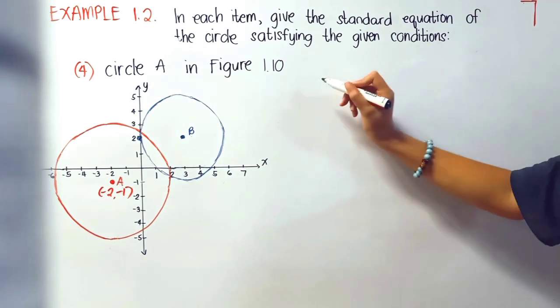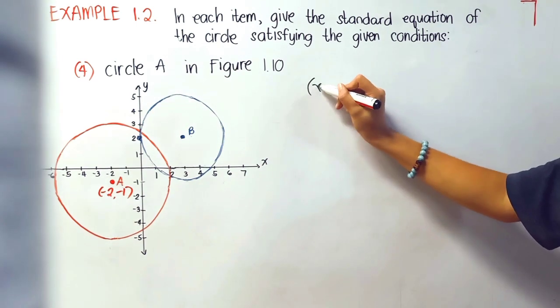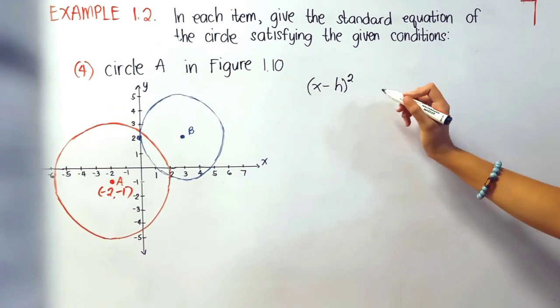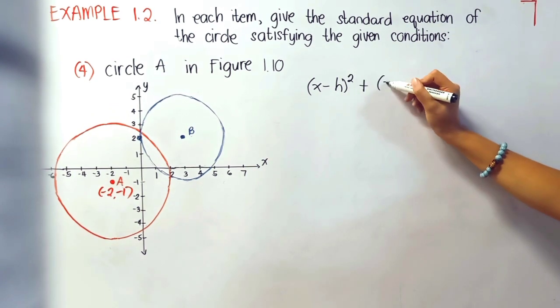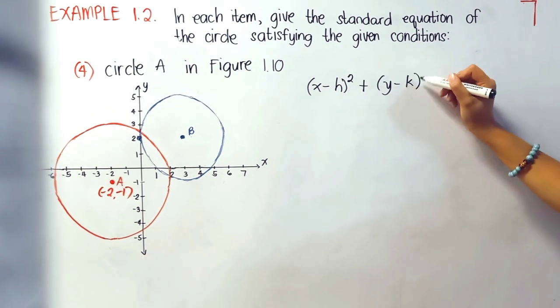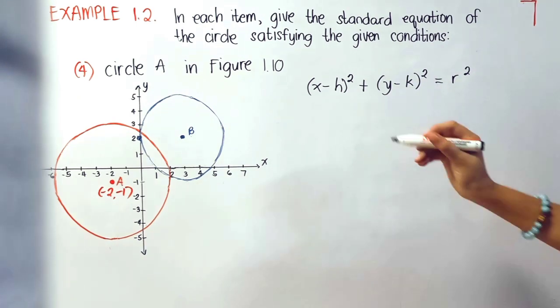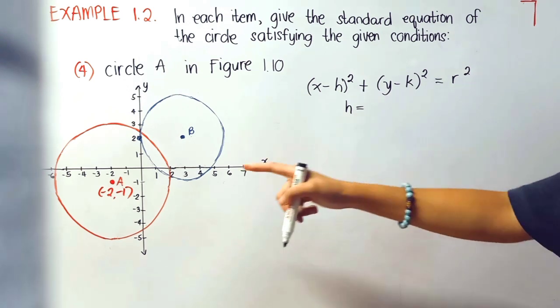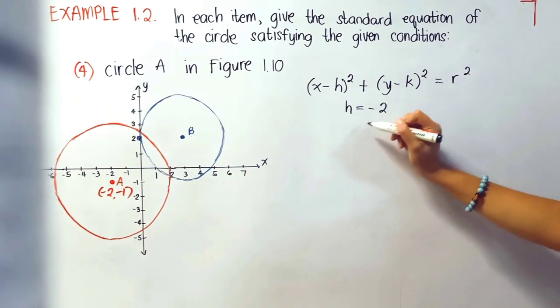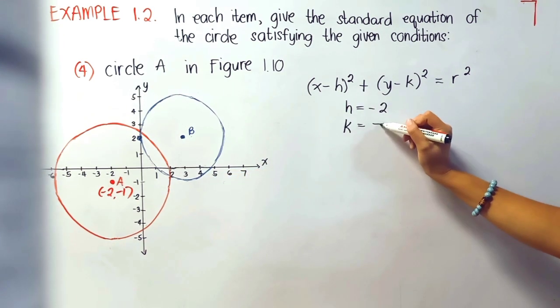we will be using x minus h quantity squared plus y minus k quantity squared equals r squared. Our h is negative 2 and our k is negative 1.